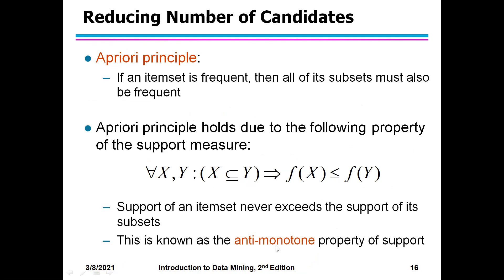What does the Apriori principle say? If an item set is frequent, all its subsets must also be frequent — I measure frequency using the support measure. This means if CDE is frequent, then CD, CE, DE, C, D, E are all frequent by default. If AB is infrequent, all its supersets are also infrequent and must be pruned. This property is the anti-monotone property. You will understand the Apriori principle better when we do problems on it.